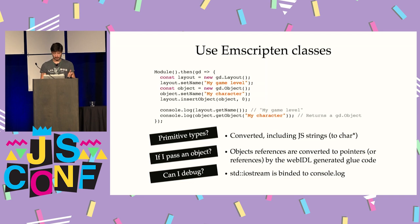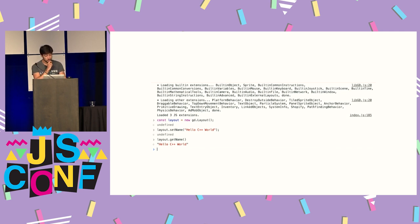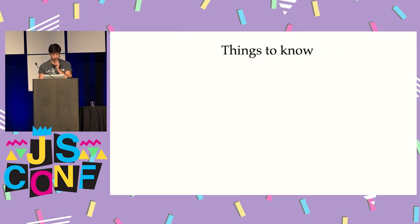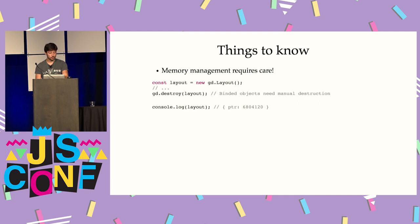With this we have something running in a browser. Here is the Chrome debugger — you can see on the top there is output from the C++ code base, so it's working. I can create a new object and call methods on it. It's quite nice to have the C++ code base you've been writing for years working in a browser. There are a few things to know. First, memory management requires care. When you create a new object, it's not garbage collected — a Layout object is actually a pointer to some place in the WebAssembly memory.